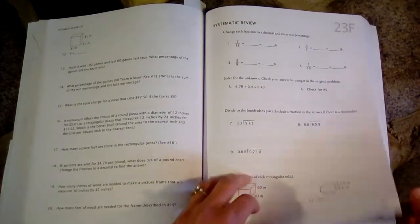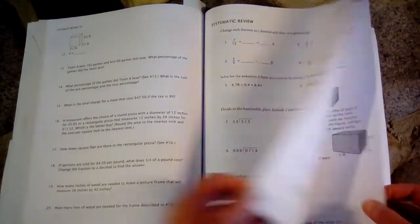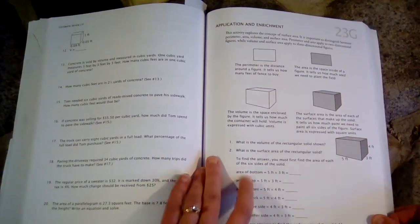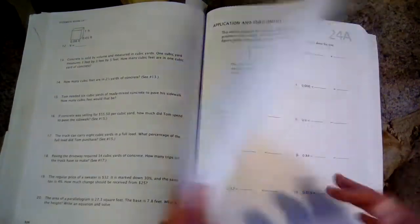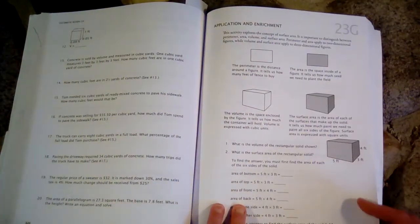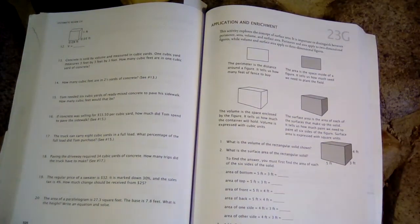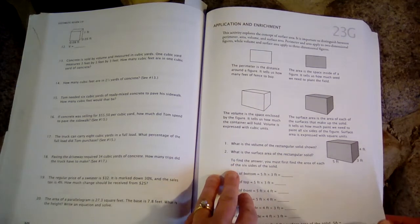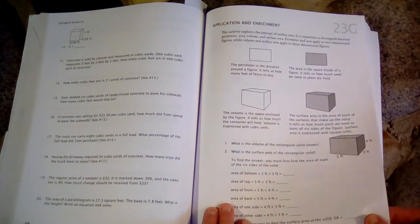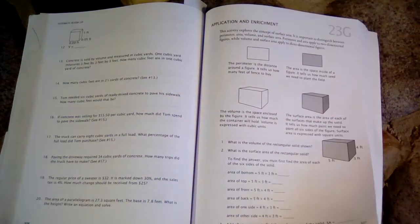And lastly, we have Worksheet G, which they call Application and Enrichment. So the G worksheets are extras. They're optional. They aren't related to the lesson usually, so they're kind of like an extra enrichment activity worksheet. So sometimes we do it, and sometimes we don't. They don't review this, and they don't test on this.